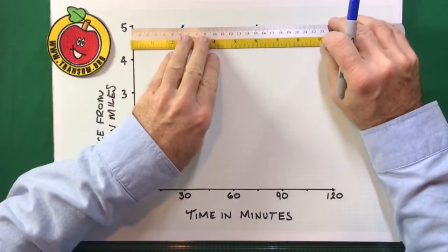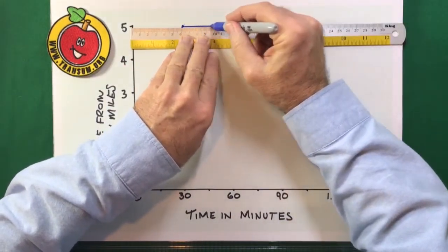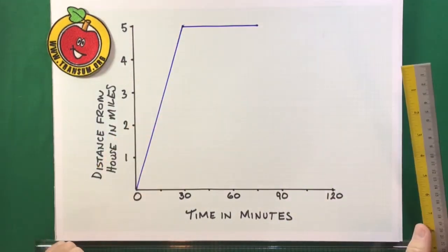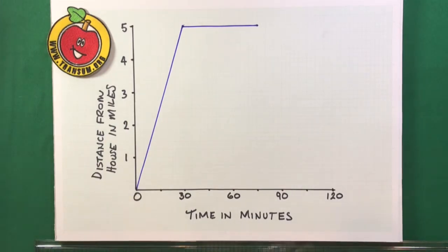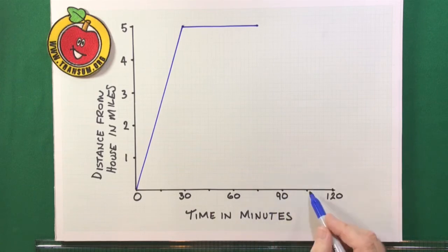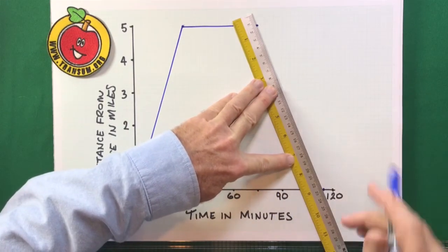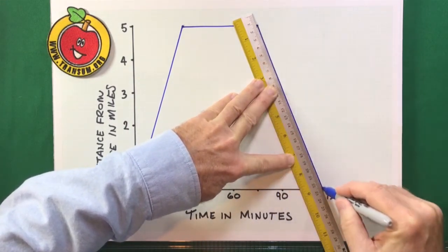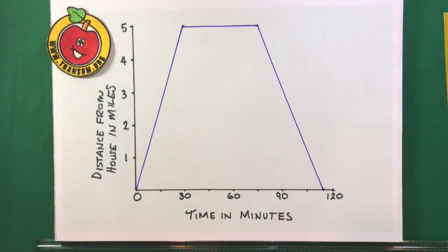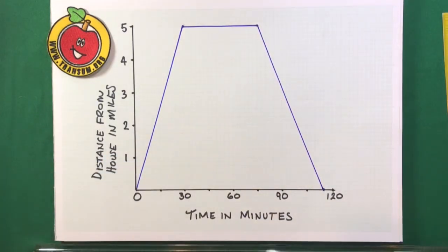And then he stays at the restaurant so that his distance from home isn't changing for that 45 minutes. And then finally, it takes him 40 minutes to get home. So, from there, 40 minutes will be roughly there. Okay, I'll complete the distance time graph showing the outward, the time at the restaurant and then the journey back.